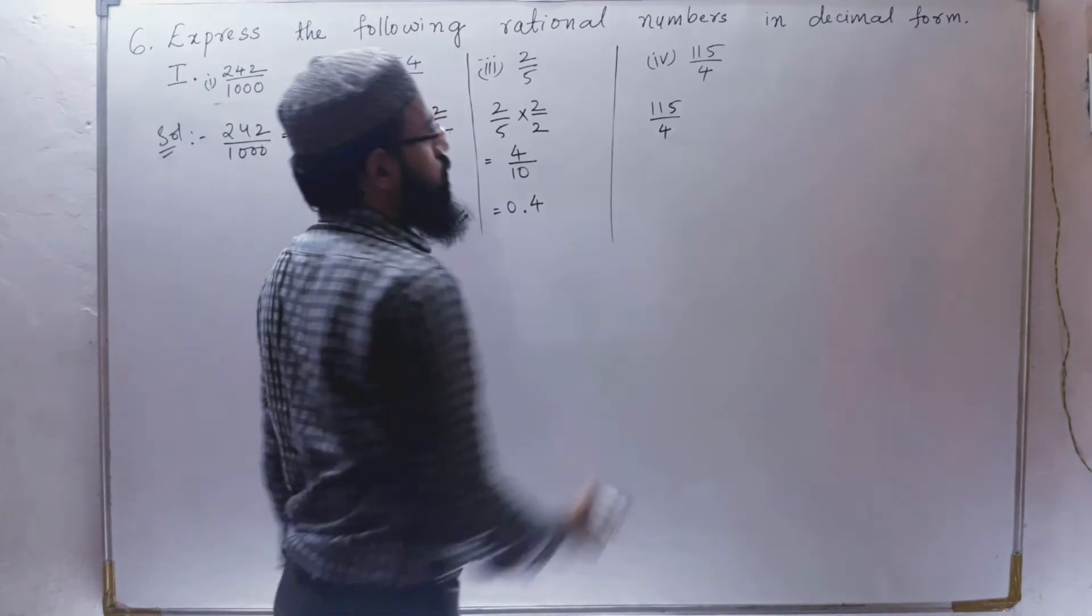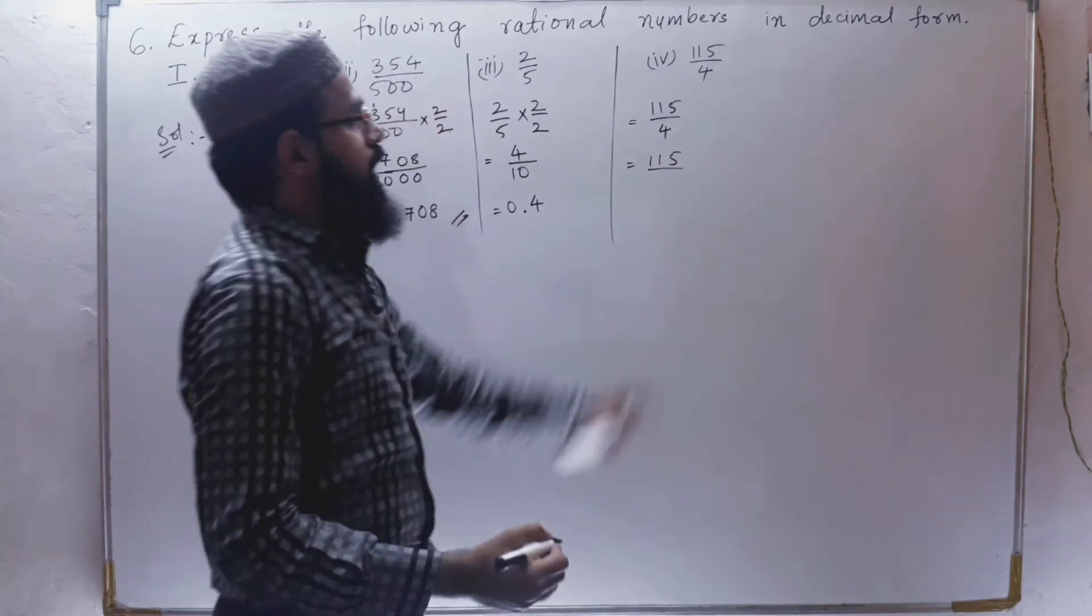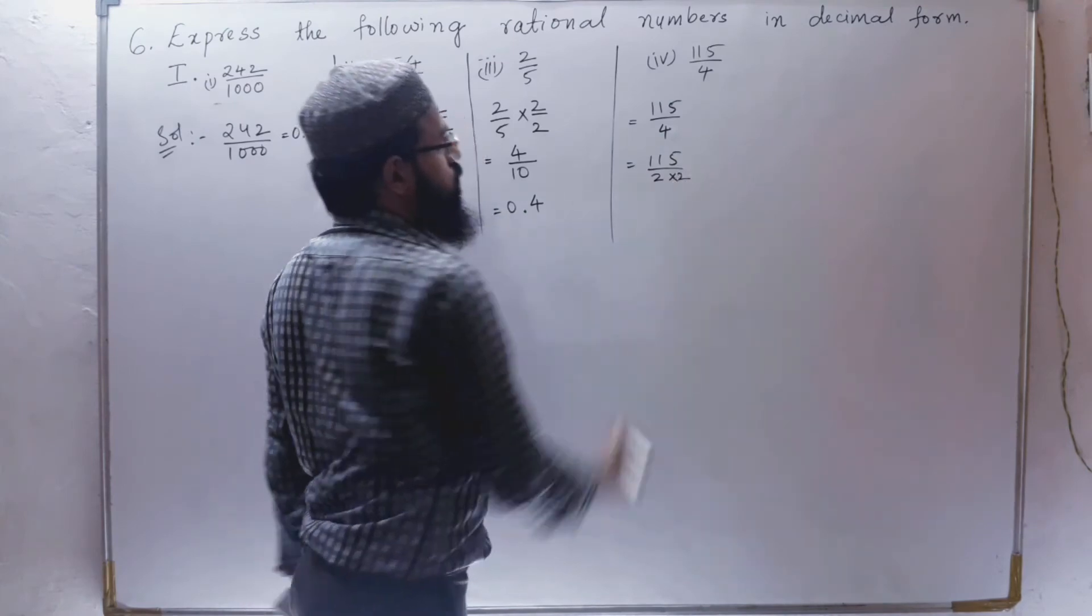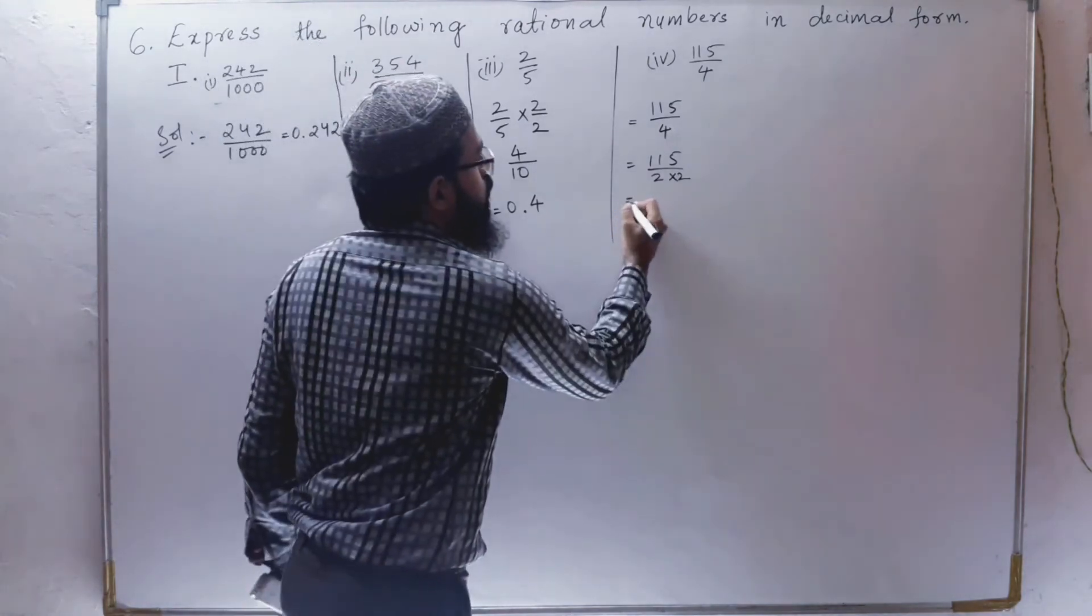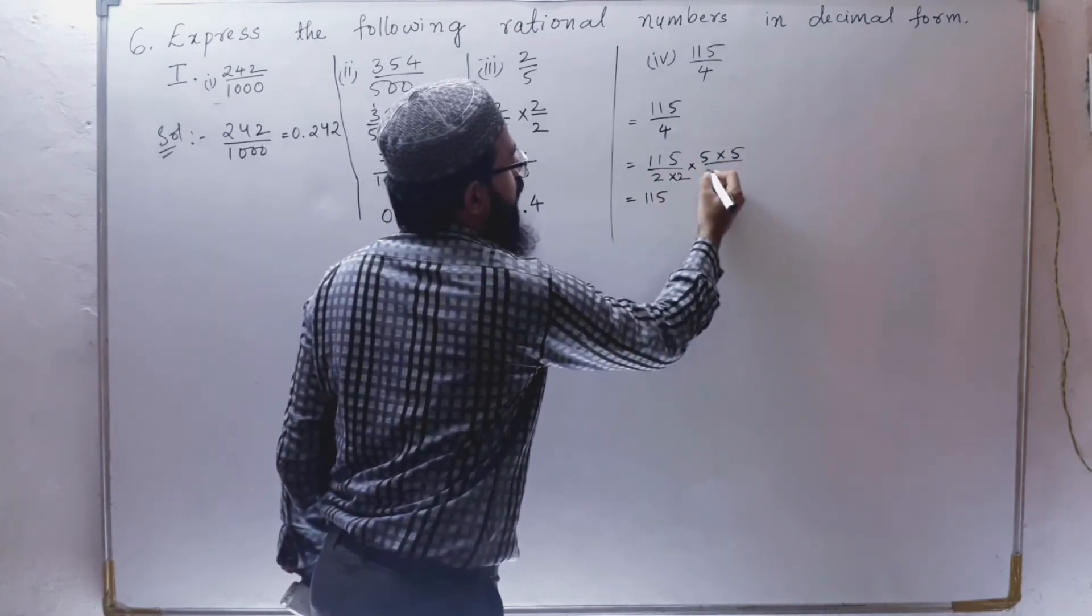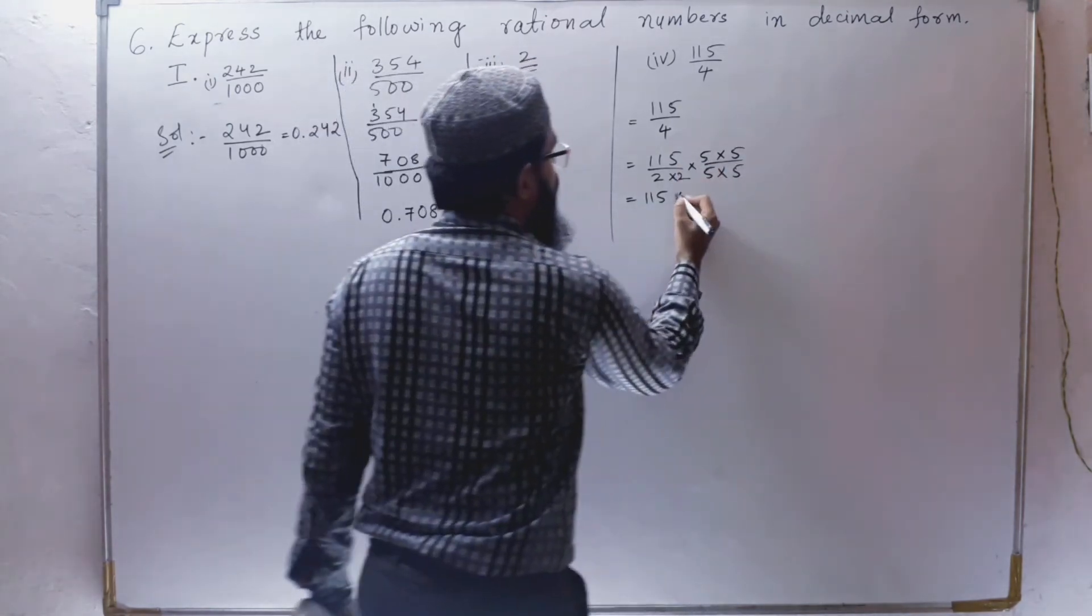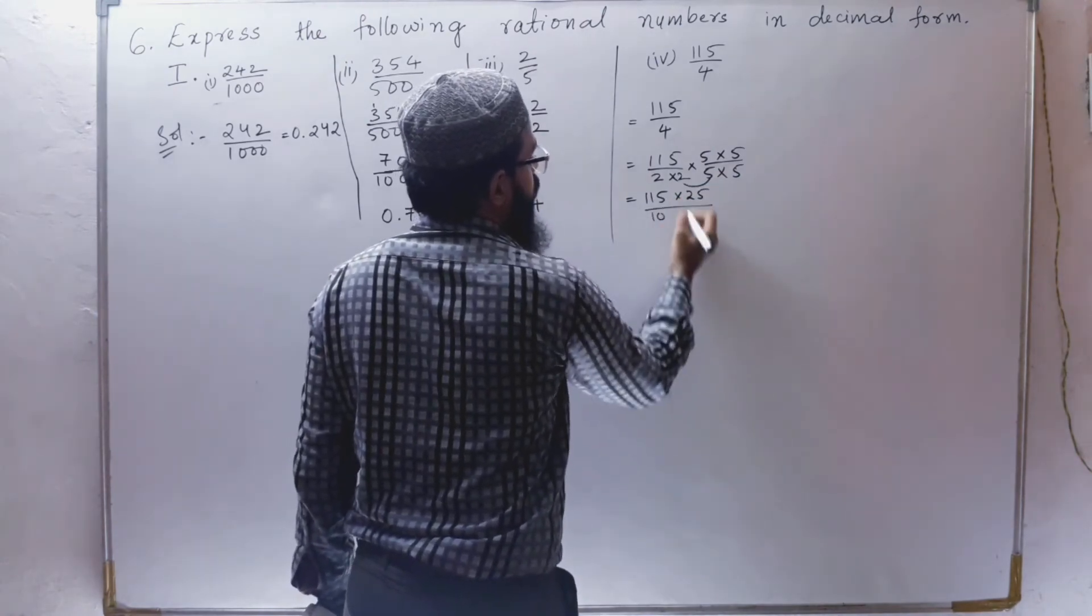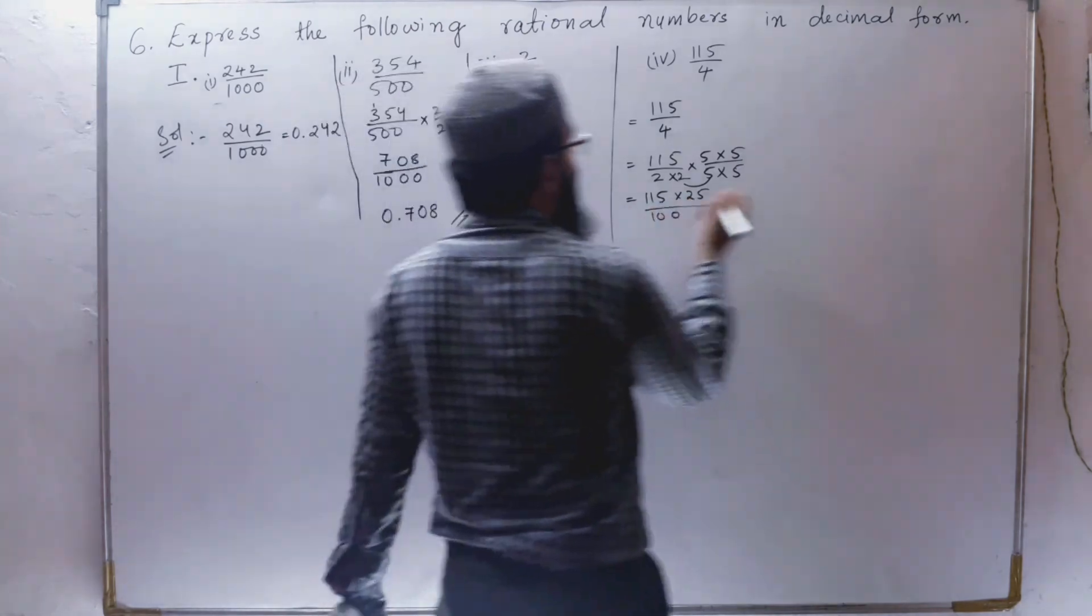One, one, 115 by 4. We will write the factors of 4. What are the factors? 2 into 2. As you can see, there are two 2s. Then we will multiply this with two 5s. So 1, 1, 5. Here we can multiply 5 into 5 and divide with 5 into 5. 5 times 5 is 25. 25 into 115 by 2 times 5 is 10, 2 times 5 is 10. We can write it as 10 times 10 is 100.